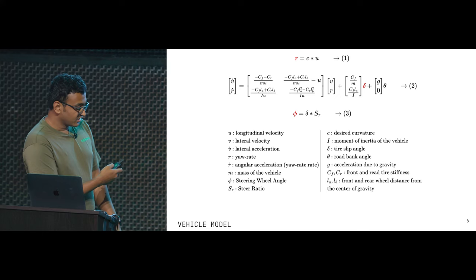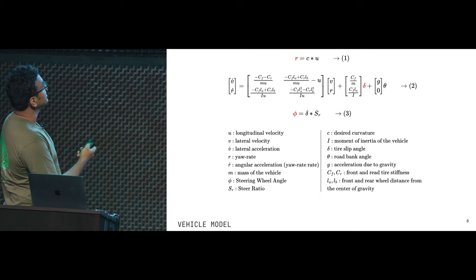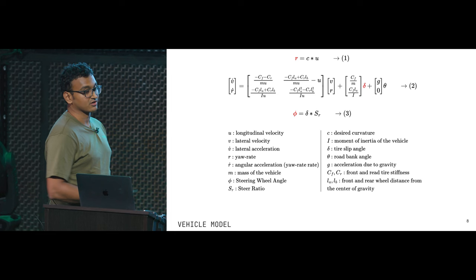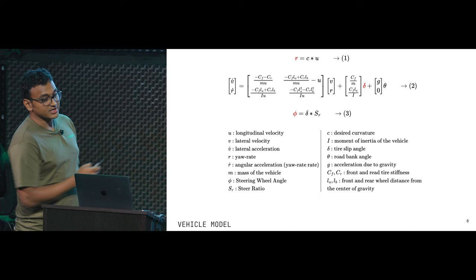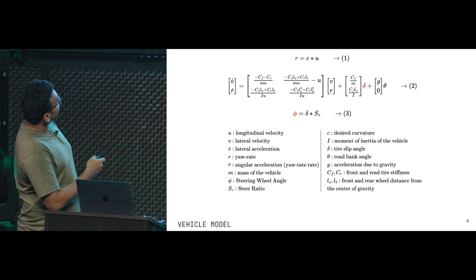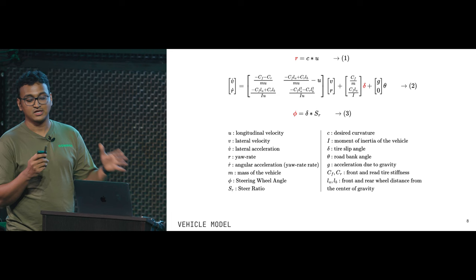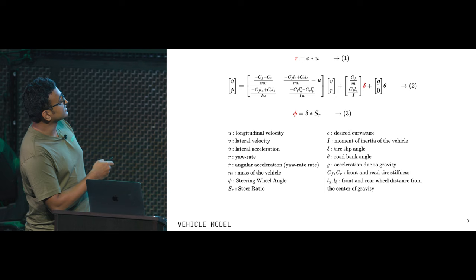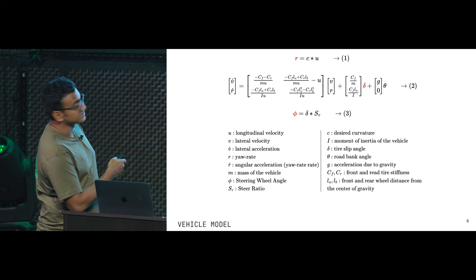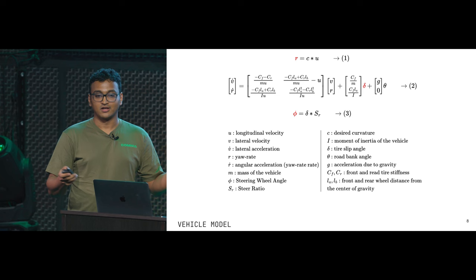If you draw the free body diagram and the forces that act on this object, you end up with a set of equations. It looks quite scary but it's not. We have the desired curvature from the model and planner. If we make some generous assumptions about car dynamics, we can use the state space equation to find what the slip angle is to achieve a particular yaw rate. When we know the slip angle, we can find the steering angle required to achieve the maneuver we want. This is called the vehicle model.